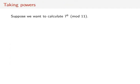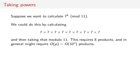Let's see how easy it is to take powers, with the example of 7 to the 9th mod 11. We could do this by calculating 7 times 7 times 7 times 7 times 7 times 7 times 7 times 7 times 7, and then taking that all modulo 11. This requires a total of 8 products, and in general we might expect this to run in big O of p time. But if we stop and think about what we've done, we've actually been rather redundant. Once we've calculated 7 times 7 one time, we don't have to calculate 7 times 7 all over again — we've already done it.